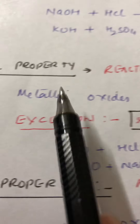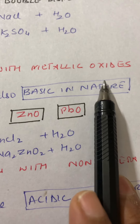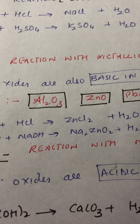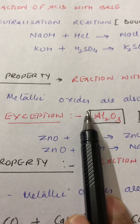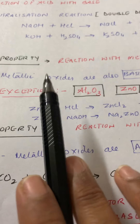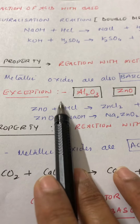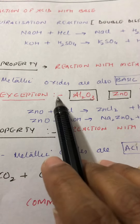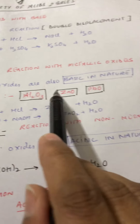The next property discusses reaction with metallic oxides. We have already studied the reaction of acids and bases with metals, and concluded that metals are basic in nature. Since metals are basic in nature, their oxides are also basic in nature.